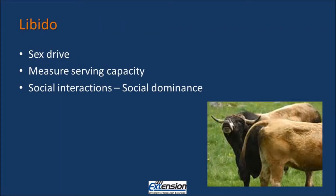Libido is the animal's sex drive. An animal that has low libido or low sex drive is not going to mate as many females as an animal with higher sex drive. You can measure the animal's sex drive or libido based on his serving capacity. Serving capacity is the number of animals the bull will breed in a given period of time. Social interactions and social dominance also affect an animal's libido. Often, if you have more than one male, the dominant male will breed his select choice of females, leaving the other females for the other male to breed.